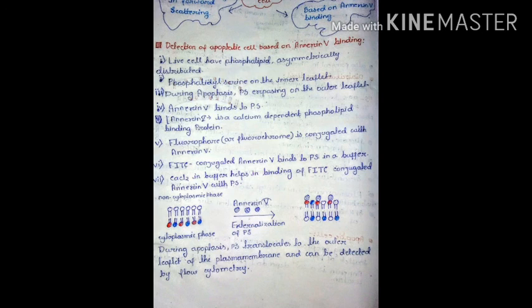FITC (fluorescein isothiocyanate) is a derivative of fluorescein used in the detection of apoptotic cells; it is a type of fluorophore. The buffer used contains CaCl2, which helps in the binding process of annexin-5 to phosphatidylserine, since annexin-5 requires calcium for its binding.